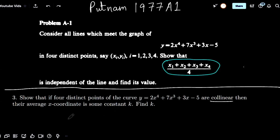That's interesting. It seems that regardless of the line they lie on, their average is always going to be some constant. It's actually quite hard to get your hands on the Putnam 1977 paper, but I've managed to get a screenshot here.